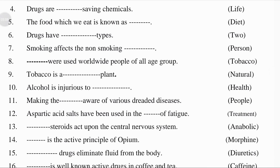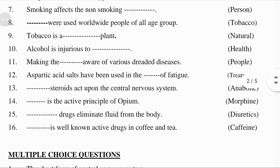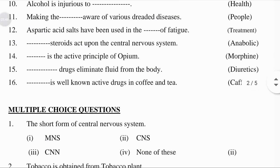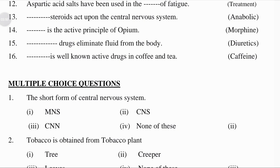Dash was used worldwide by people of all age groups — answer: tobacco. Tobacco is a dash plant — answer: natural. Alcohol is injurious to dash health. Making the dash aware of various dreaded diseases — answer: people. Aspartic acid salts have been used in the dash of fatigue — answer: treatment. Dash steroids act upon the central nervous system — answer: anabolic. Dash is the active principle of opium — answer: morphine. Dash drugs eliminate fluid from the body — answer: diuretics. Dash is a well-known active drug in coffee and tea — answer: caffeine.